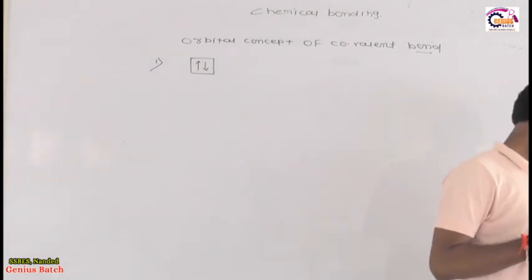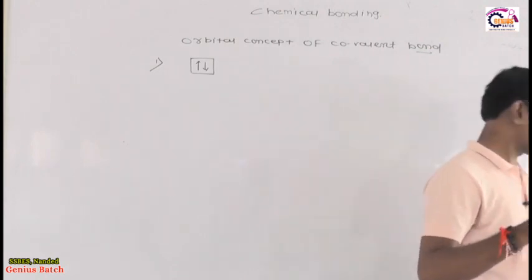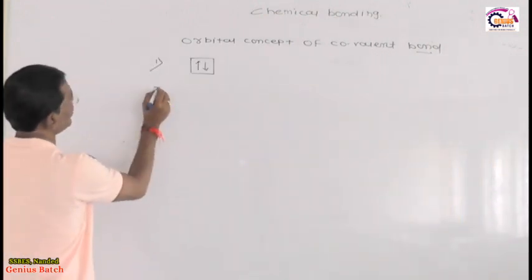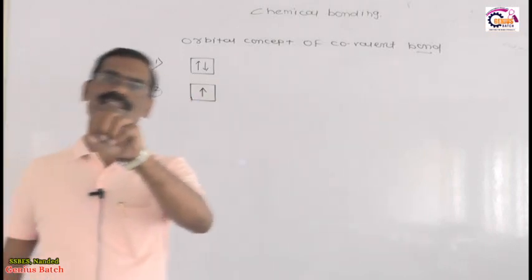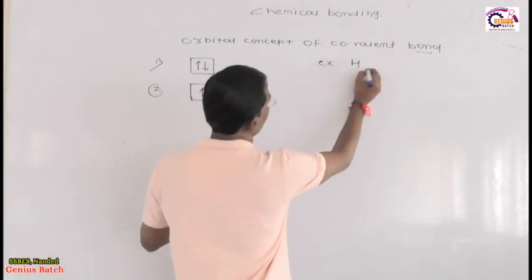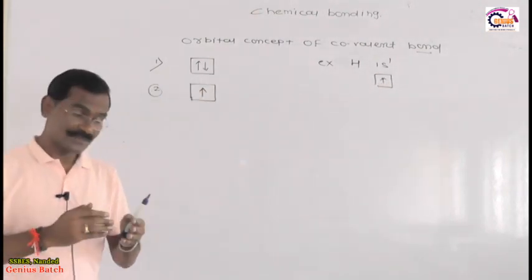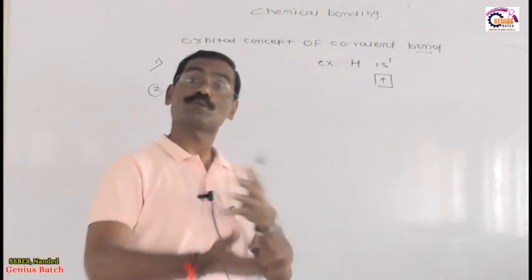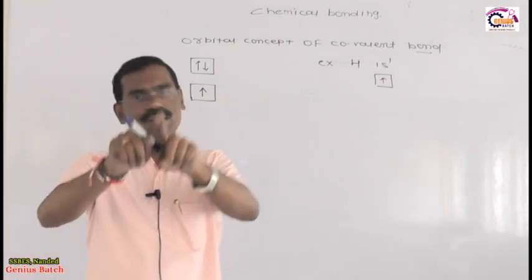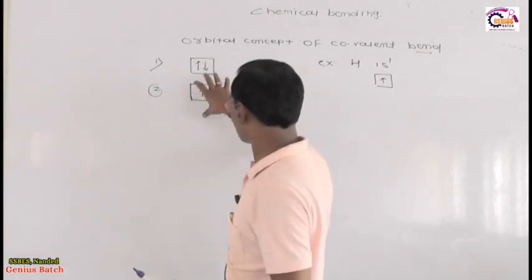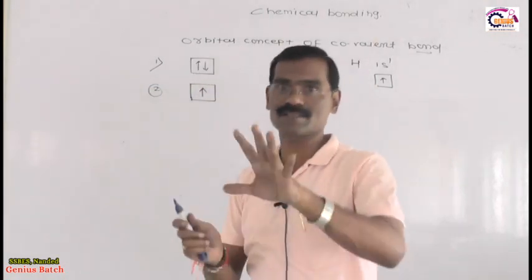Second point: a half-filled orbital or unpaired-electron orbital accepts one electron from another atom to complete its orbital. For example, hydrogen has the configuration 1s¹ — only one electron in its orbital. This atom will accept one more electron from another atom to complete its orbital. This is how the orbital gets completed by accepting one more electron from another atom.